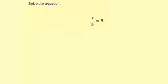Solve the equation: x divided by 3 equals 5. So the ratio of some number to 3 is going to equal 5. And there are a couple of different ways you can solve this.